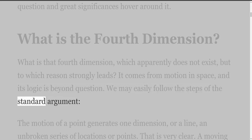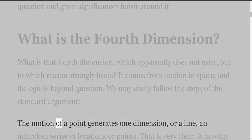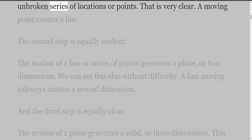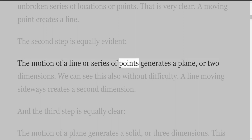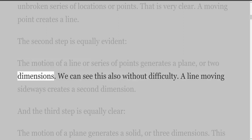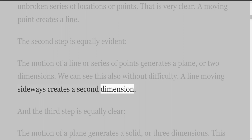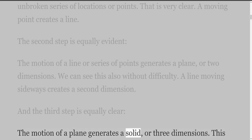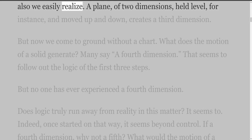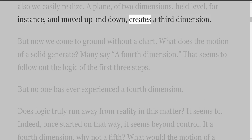We may easily follow the steps of the standard argument. The motion of a point generates one dimension, or a line, an unbroken series of locations or points. A moving point creates a line. The motion of a line or series of points generates a plane, or two dimensions. A line moving sideways creates a second dimension. The motion of a plane generates a solid, or three dimensions. A plane of two dimensions, held level, for instance, and moved up and down, creates a third dimension.